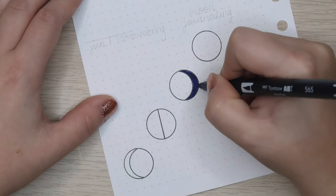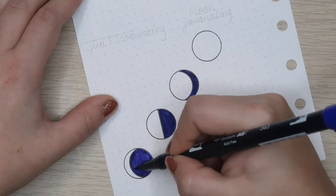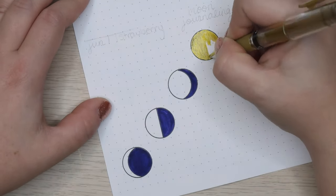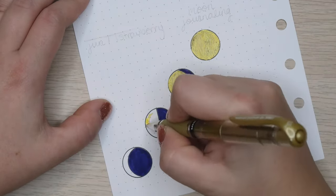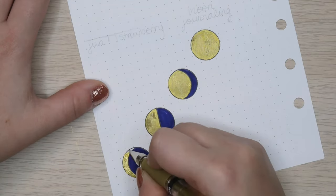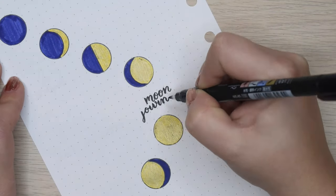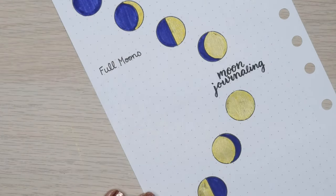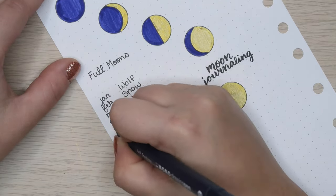This first spread is all about moon journaling. Last year, I became interested in moon journaling and I've been doing it for seven months now. So when the new year came around, I knew I wanted to have a spread where I could see all of the themes that relate to each moon phase at a quick glance.